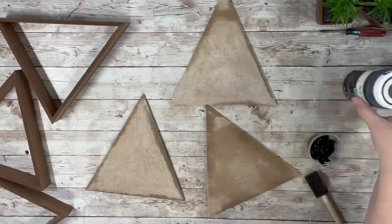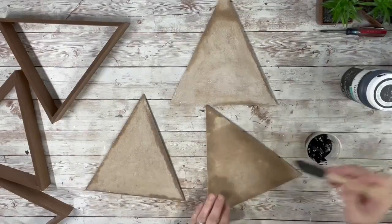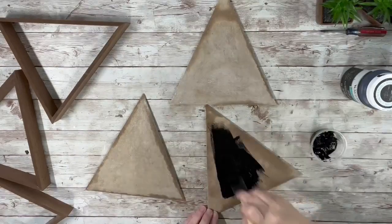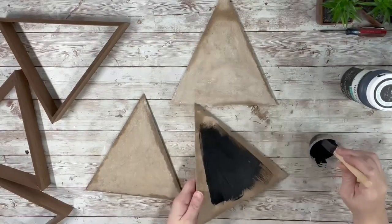Next I took the black chalk paint and painted the back part of the boxes that I had removed and I just did one coat of the black chalk paint.